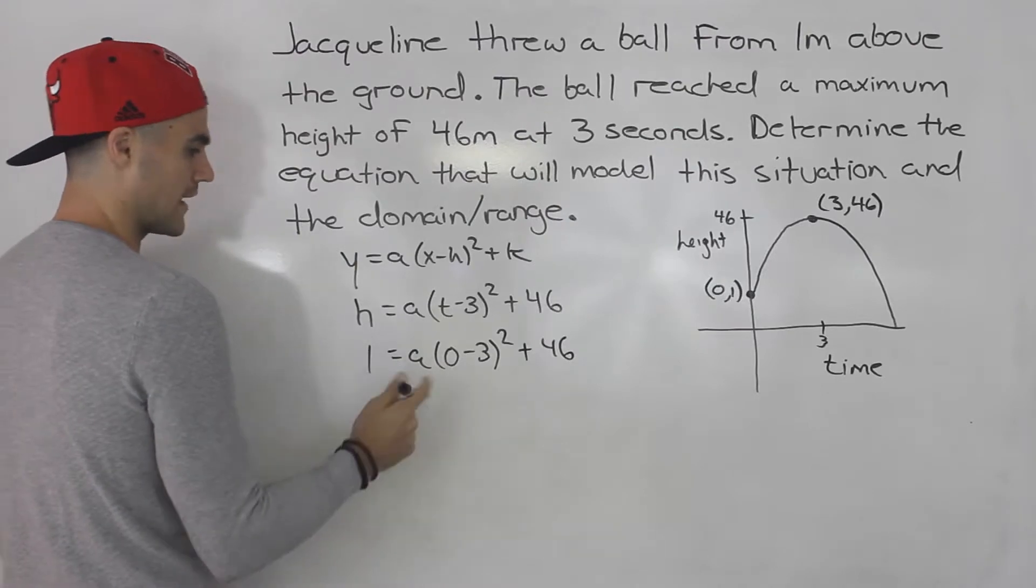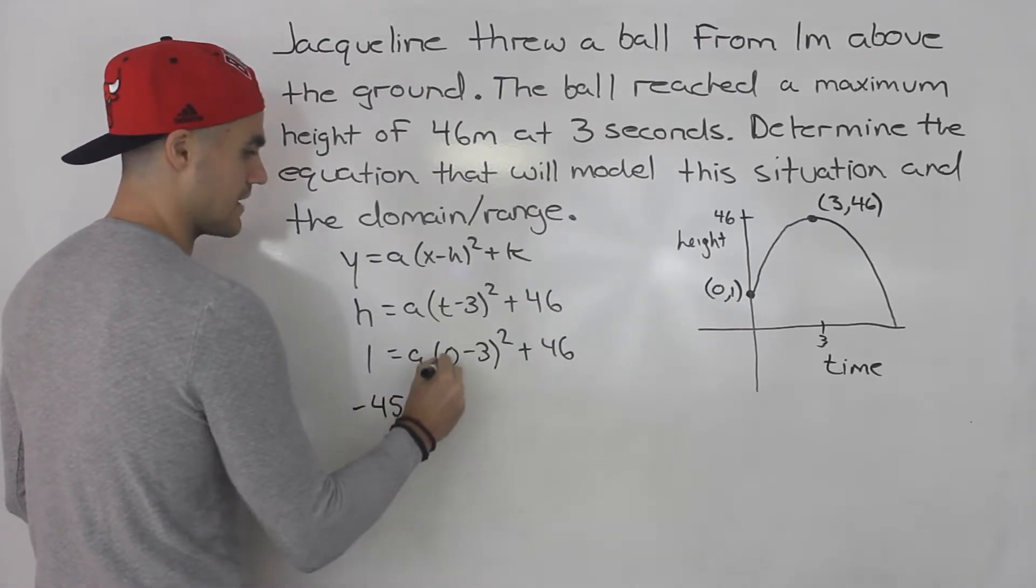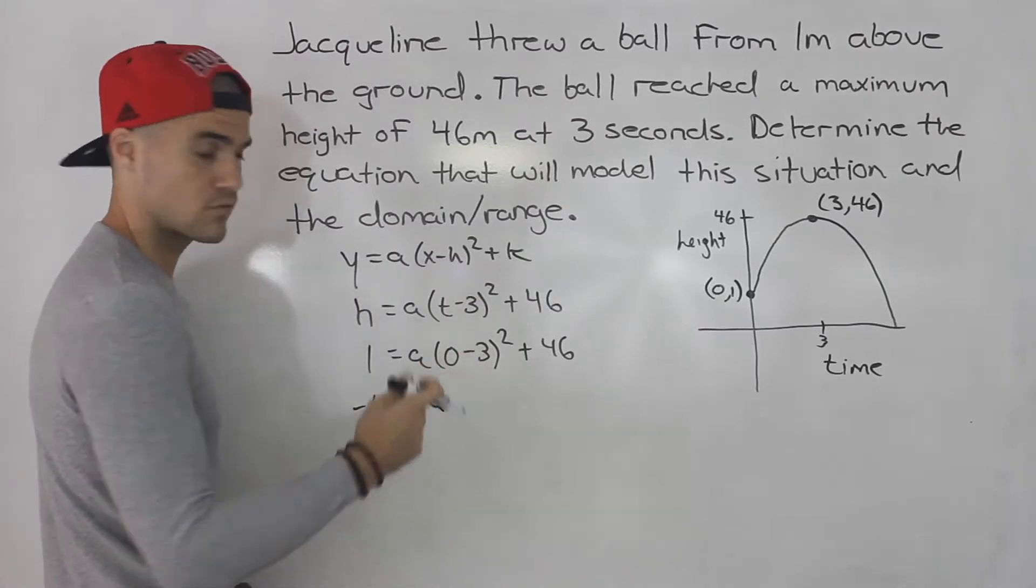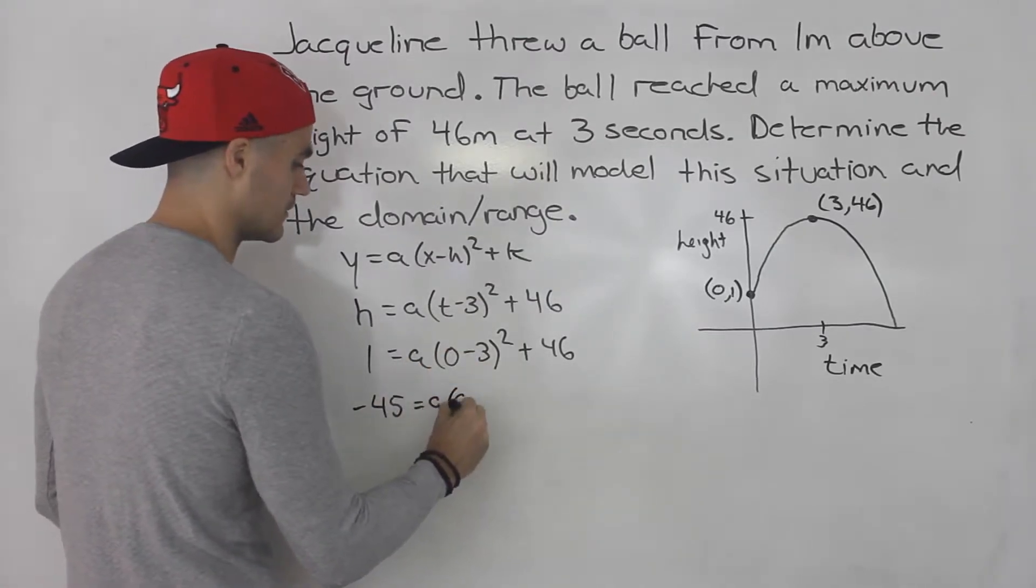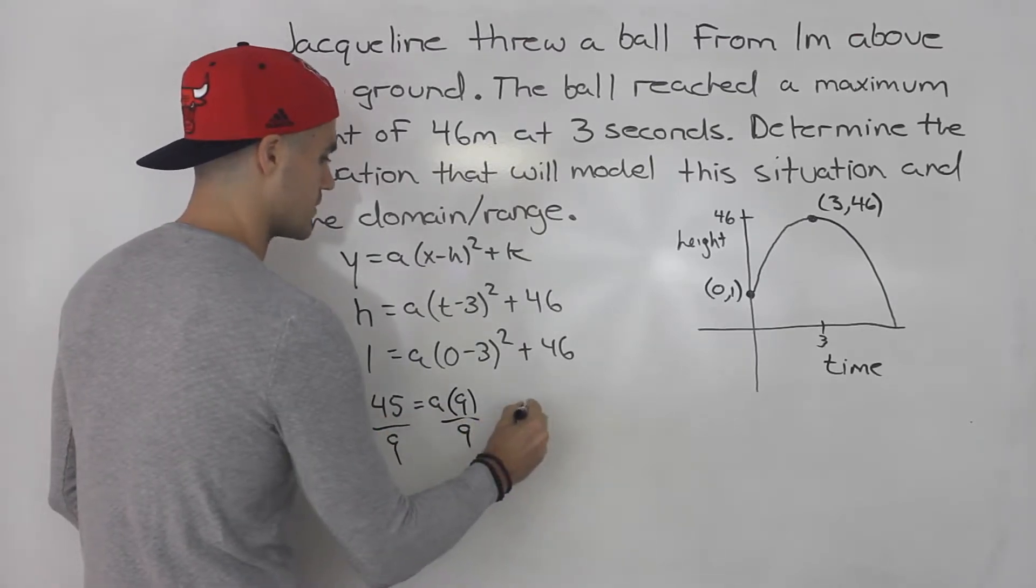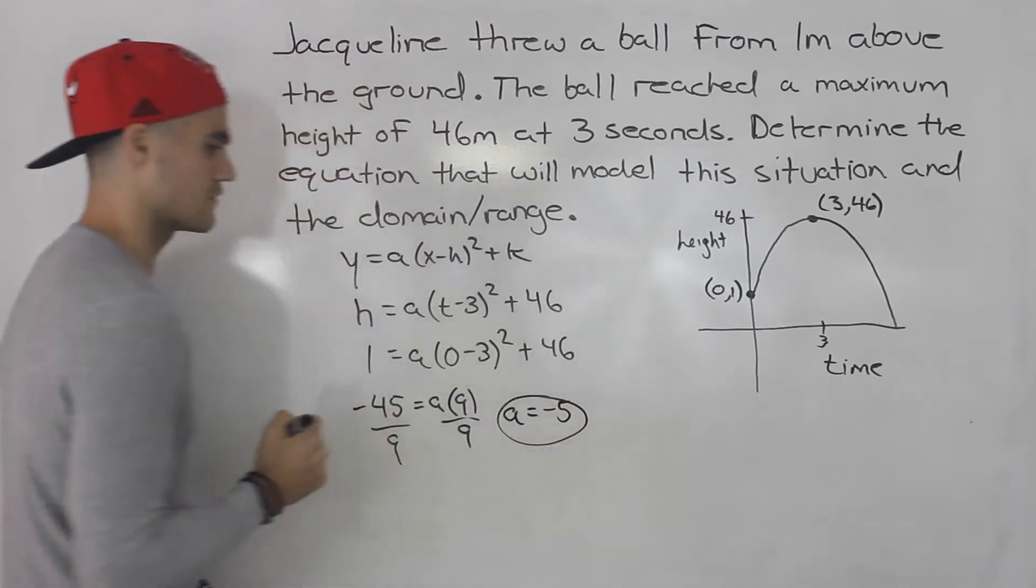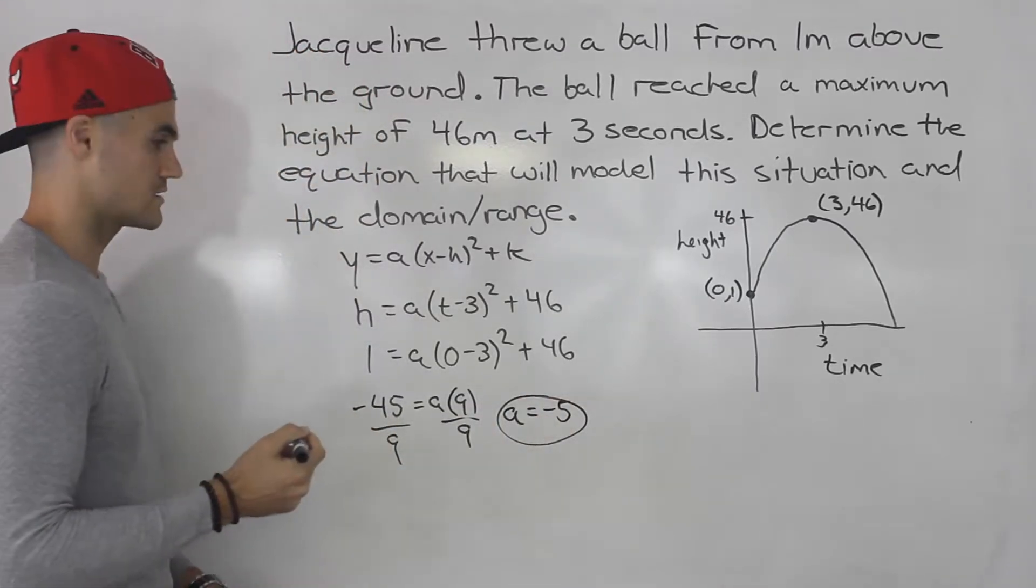So we bring the 46 over. 1 minus 46 gives us negative 45. This will be a times, 0 minus 3 is negative 3. Negative 3 squared is 9. So divide both sides by 9. So the a value is negative 5. When you solve for the a value it's going to be negative 5.